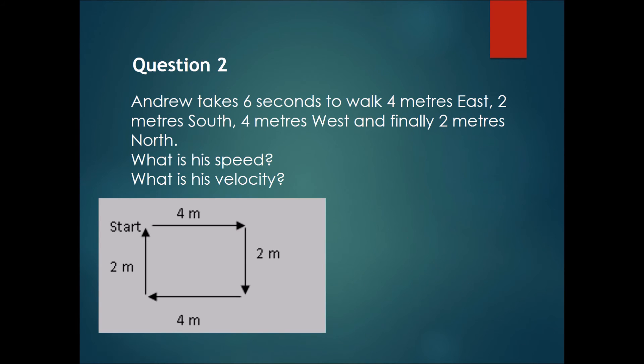Now let's take a look at question two. Andrew takes six seconds to walk four meters east, two meters south, four meters west, and finally two meters north, and he ends up at exactly the same place that he started in. So what is his speed and what is his velocity? Please try out this question now.